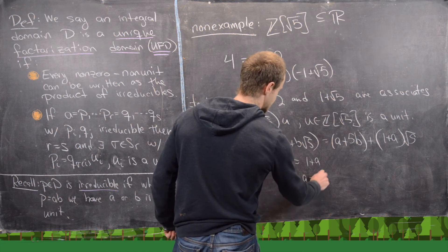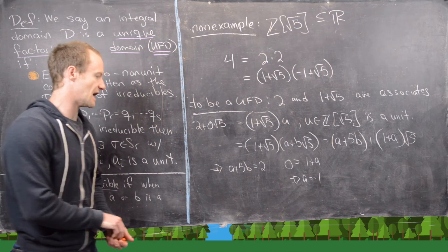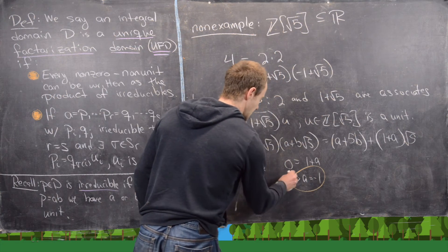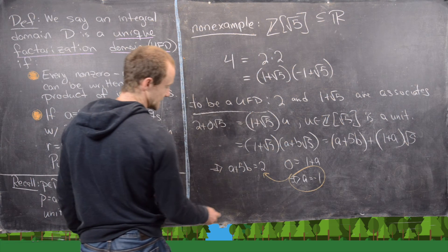Notice that gives us A equals negative 1. But now if we go ahead and plug A equals negative 1 into this, we'll get negative 1 plus 5B equals 2.